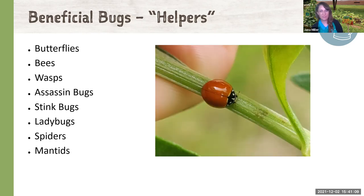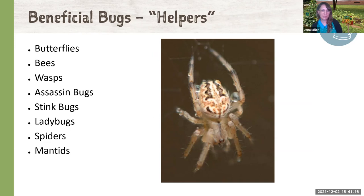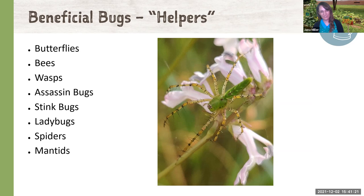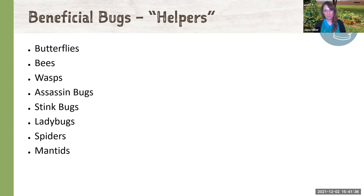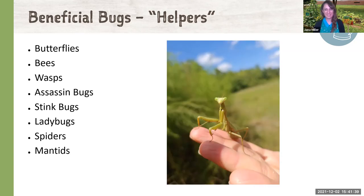We have a couple of spiders too — orb weavers are very beneficial to your garden. We also have a type of predatory spider common in Florida called a snake spider. They don't have webs, so they can actually be found on your plants — they are harmless, very safe, and good for your garden. And then finally we have mantids, which are very fun to encounter. If you have more questions about helpers, I'm happy to answer those during the Q&A.